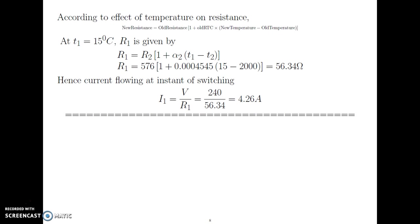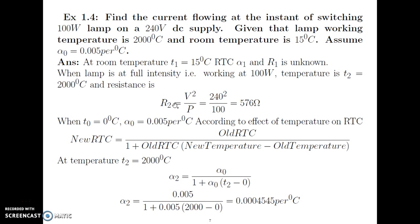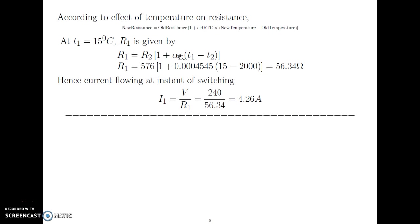According to the effect of temperature on resistance, R1 equals R2 times (1 plus alpha2 times (T1 minus T2)). Here R2 is the old resistance (known), alpha2 is the old RTC (just calculated), T1 is the new temperature (15 degree Celsius), and T2 is the old temperature (2000 degree Celsius). Substituting — 576 times (1 plus 0.00045454 times (15 minus 2000)) — gives R1 equal to 56.34 Ohm at room temperature.